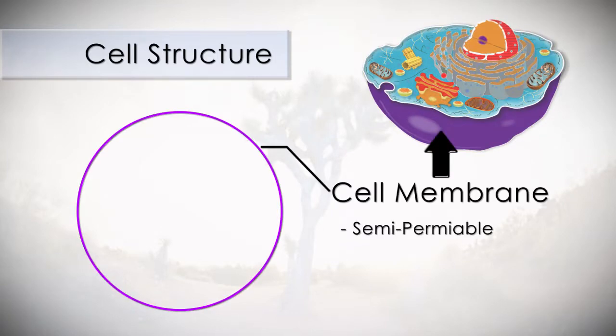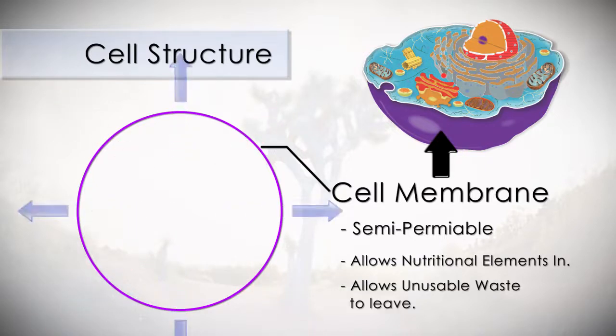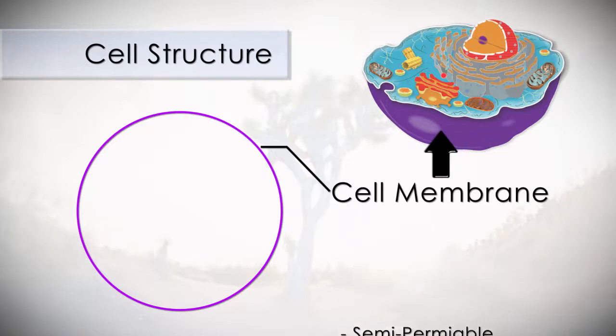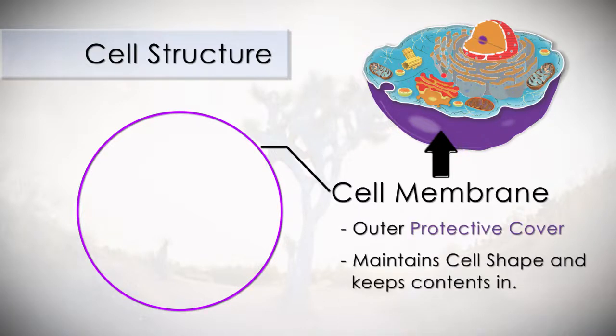The cell membrane is a semi-permeable structure that allows nutritional elements to enter the cell and unusable waste byproducts to leave the cell. And for the most part, it keeps out harmful substances. The membrane maintains the cell's shape and keeps the contents, or the organelles, from spilling out.